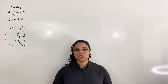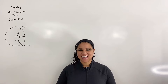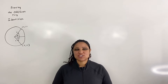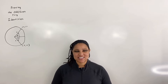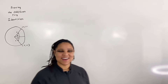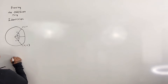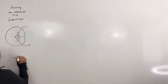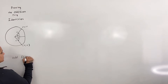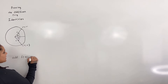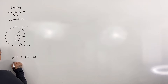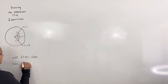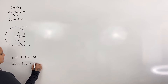In this video we are going to prove the odd and even trig identities. What does it mean for a function to be odd and what does it mean for a function to be even? Recall the definition from pre-calculus algebra. A function f is odd if f of negative theta is equal to negative f of theta. And a function is even if f of negative theta is equal to f of theta.